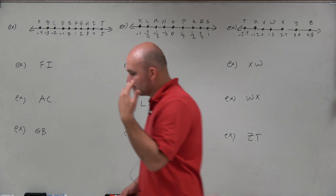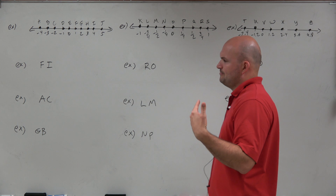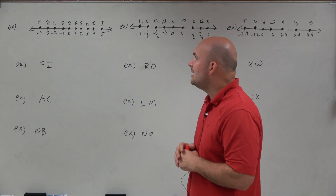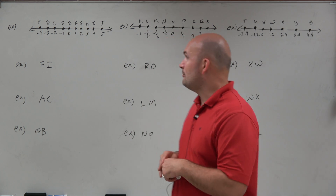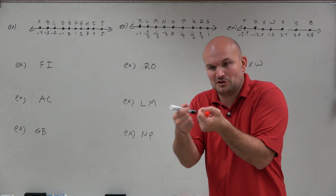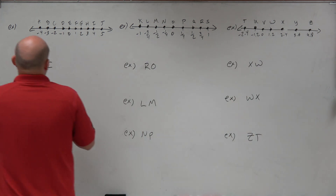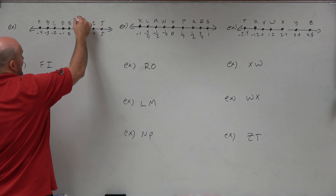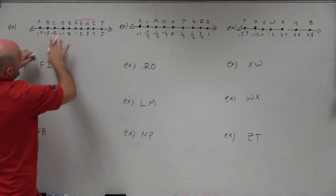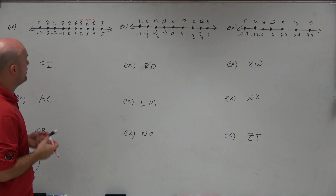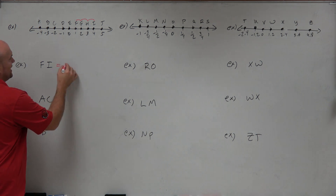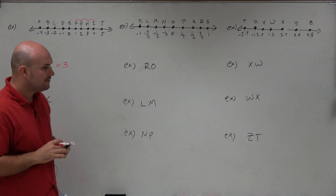Let's use our initial problem to get an idea of what we're looking for. We have points f and i, and we want to find the distance. The easiest way is kind of like looking at a ruler — you can literally count how far it is from f to i: 1, 2, 3. You can see the number line is going by 1's, so the distance between f and i is 3.